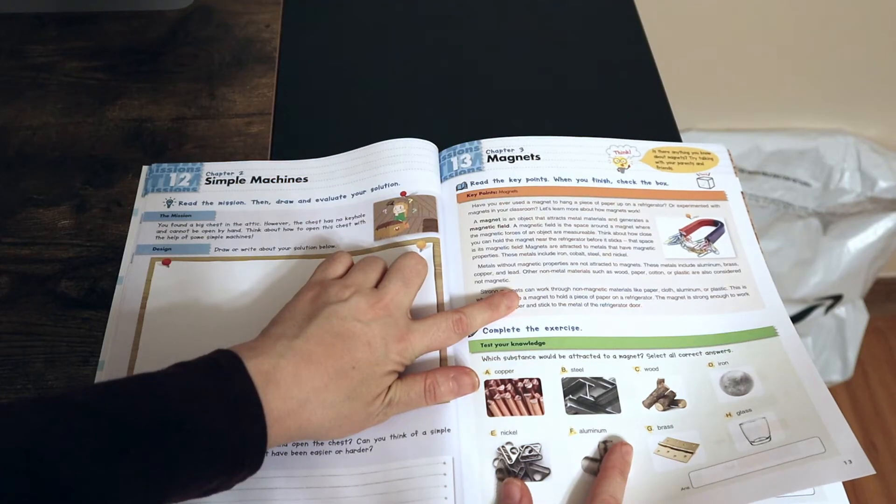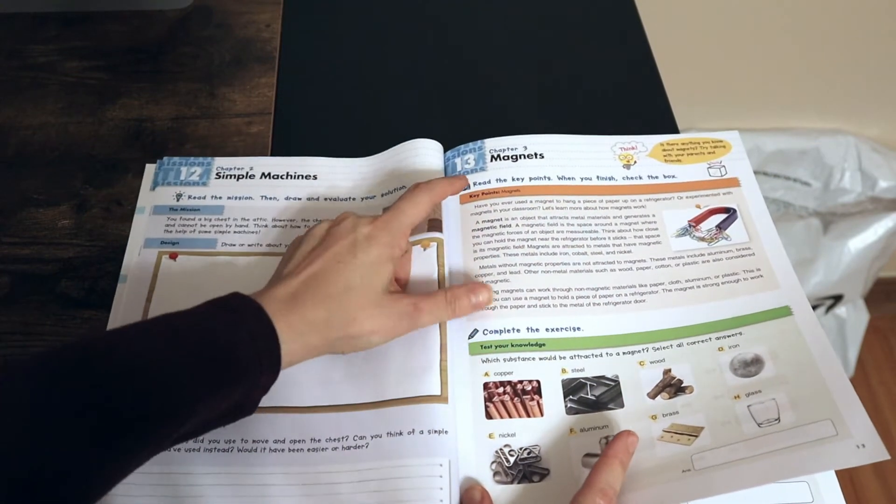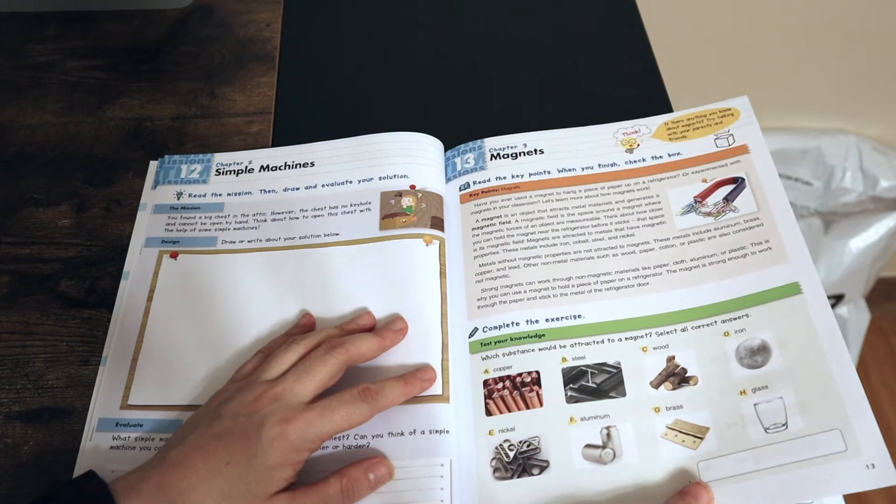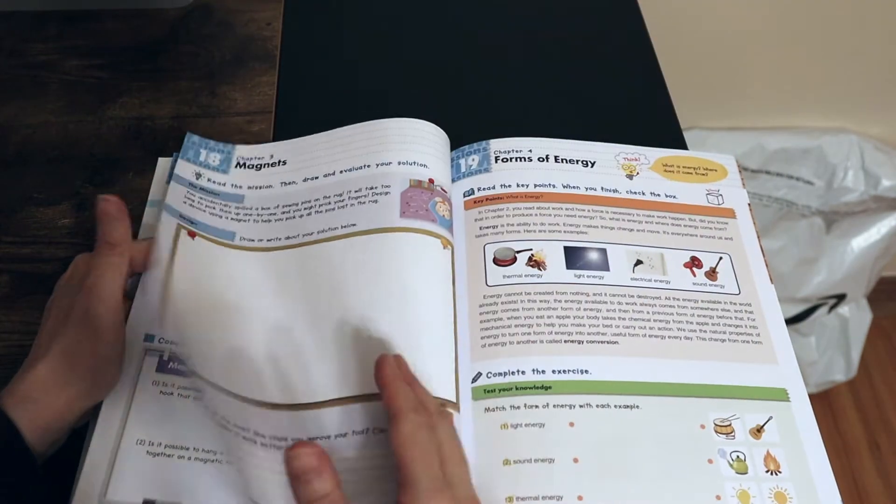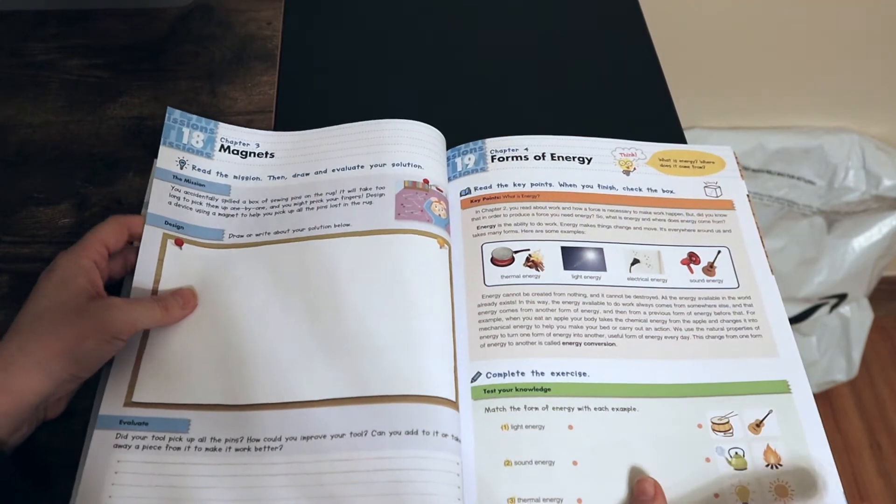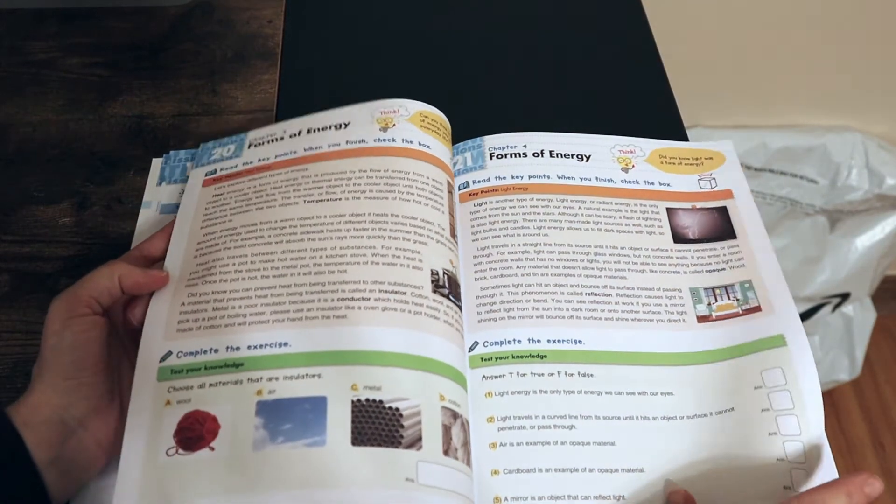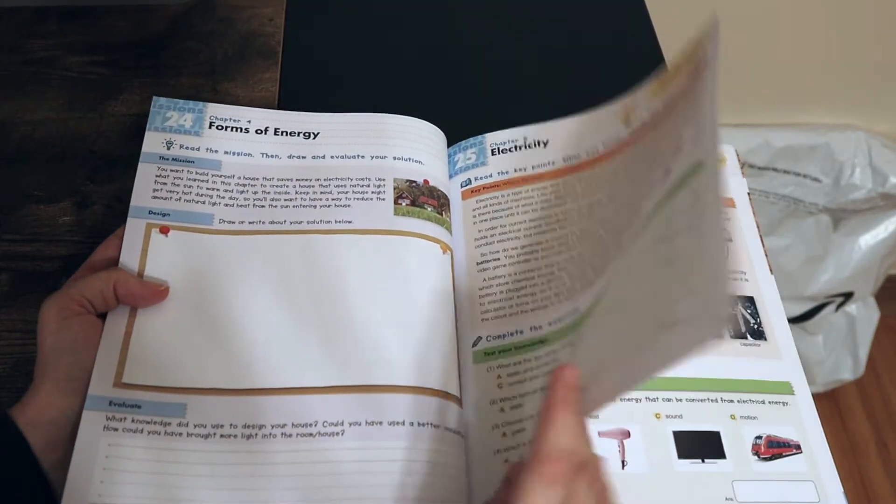And then we move into Chapter 3, which goes through magnets and again gives you a reading section explaining magnets and what they are. Chapter 4, and then they test your knowledge with some information here. Chapter 4 goes through forms of energy. And Chapter 5, we go through electricity.